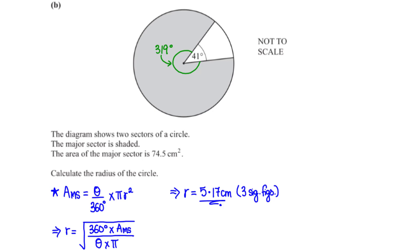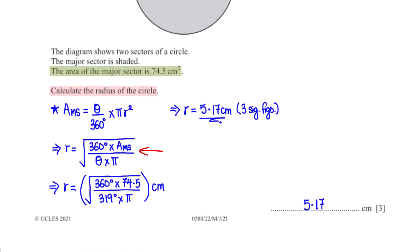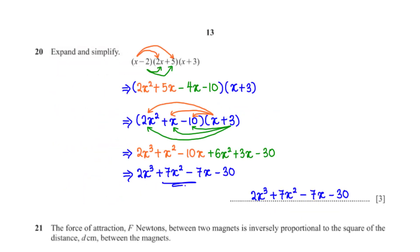The diagram shows two sectors of a circle. The major sector is shaded with area 74.5 cm². Calculate the radius. Subtracting 41 degrees from 360 gives the major sector angle as 319 degrees. Rearranging the sector area formula for radius gives: square root of (360 times area divided by theta times pi). Substituting the values gives the radius as 5.17 cm to three significant figures.